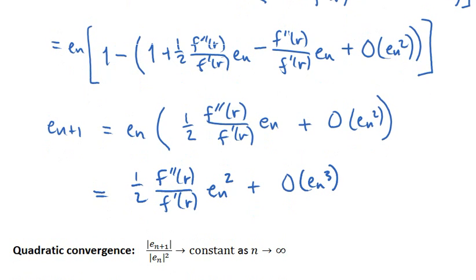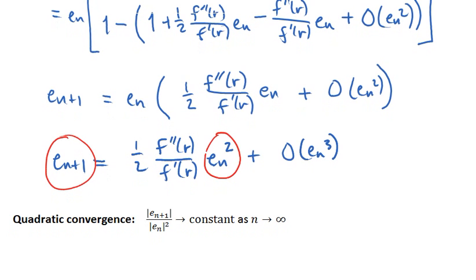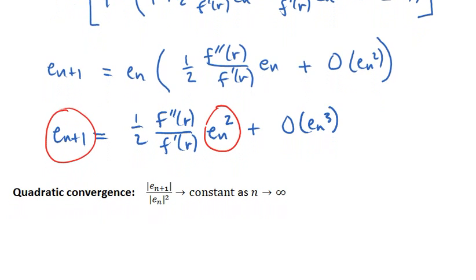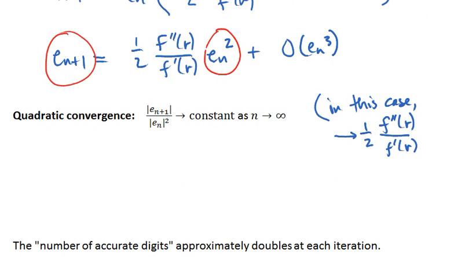The important part of the relationship is that e_{n+1} is proportional to e_n squared. If it were proportional to just e_n, that would be linear convergence. This is something different, which we call quadratic convergence. The definition of quadratic convergence simply says that the ratio of e_{n+1} to e_n squared approaches a constant as n goes to infinity. In this case, it goes to one-half f''(r) over f'(r), provided that denominator is not zero.